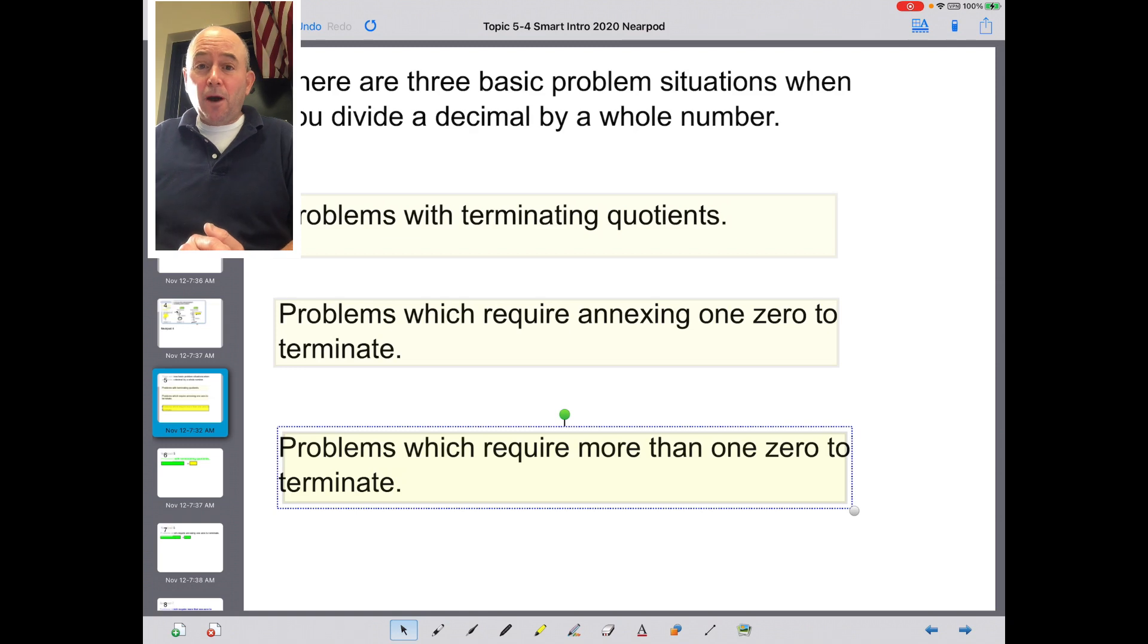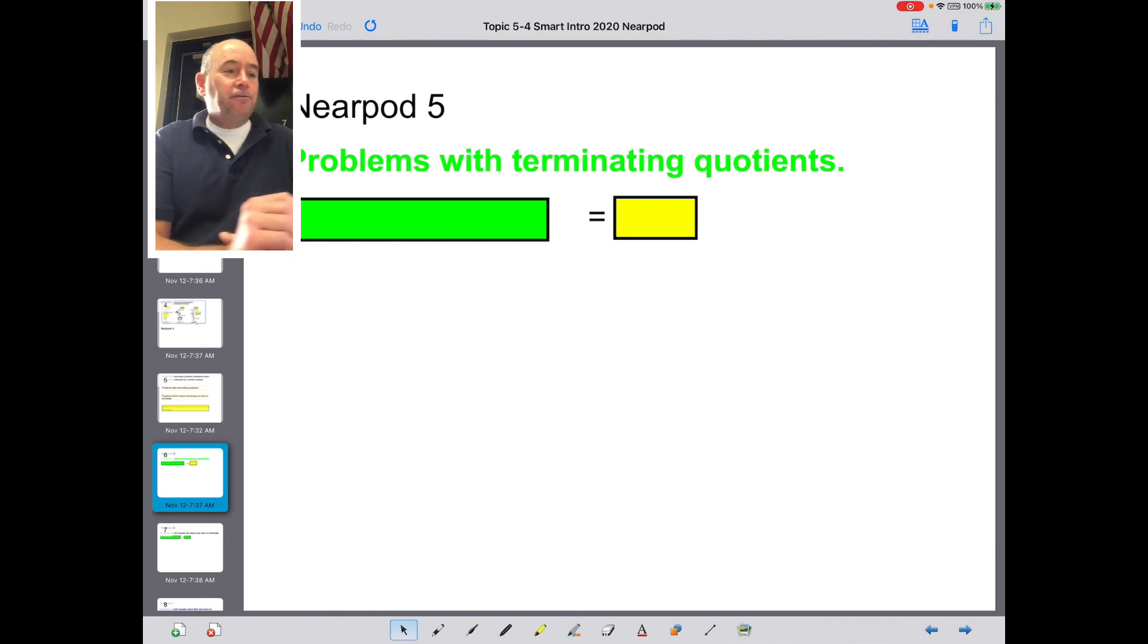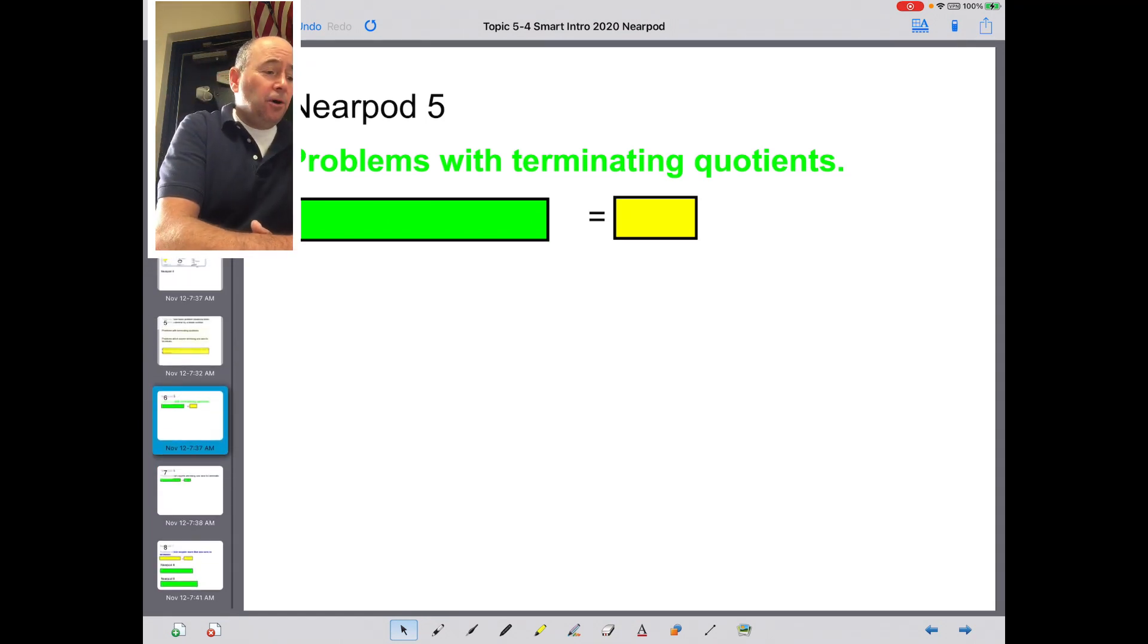Do you want to do some example problems with them? Cool. First example problem, Nearpod 5. This is a problem with a terminating quotient. So kids, Mr. Trill is going to pause the video. You do this problem. How did they do? Did you show them the answer or do you need to pause the video again?